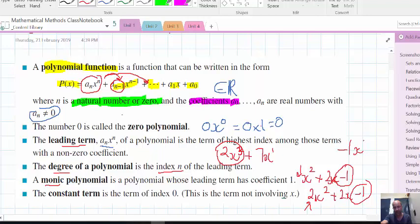It's basically part of a polynomial because negative 1 is negative 1X to the 0, which is negative 1 times 1.